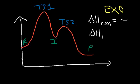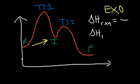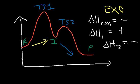For the first step, going from the reactants to the intermediate, the intermediate has more energy than the reactants — we're going up — so the system gains energy and delta H1 is positive (endothermic). Going from the intermediate to the products, you go down in potential energy, so the enthalpy for the second step is negative (exothermic). So the first step is endothermic, the second step is exothermic, and overall it's an exothermic reaction.